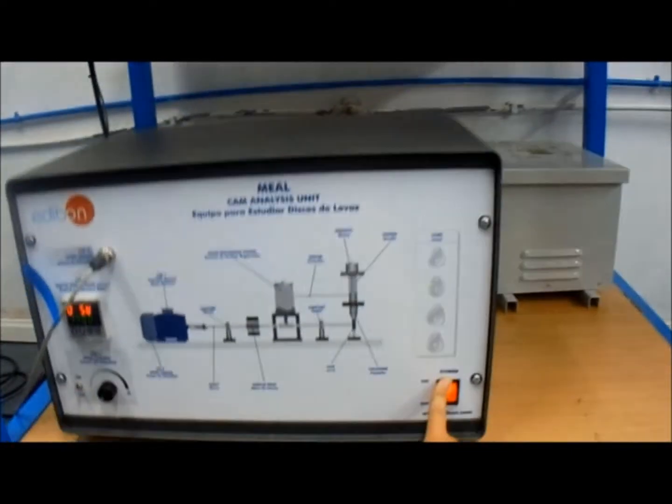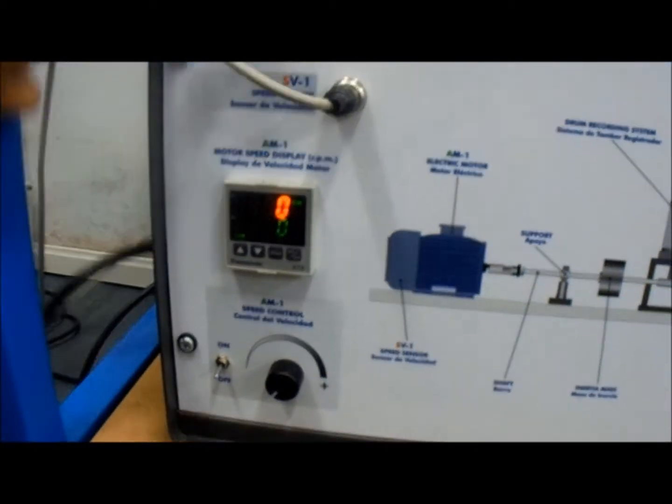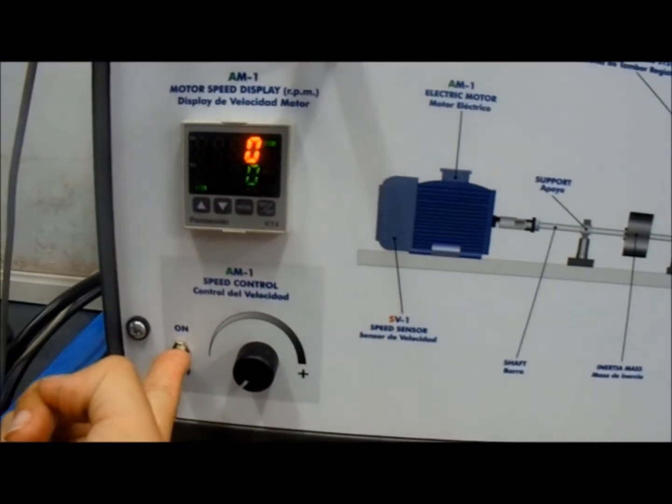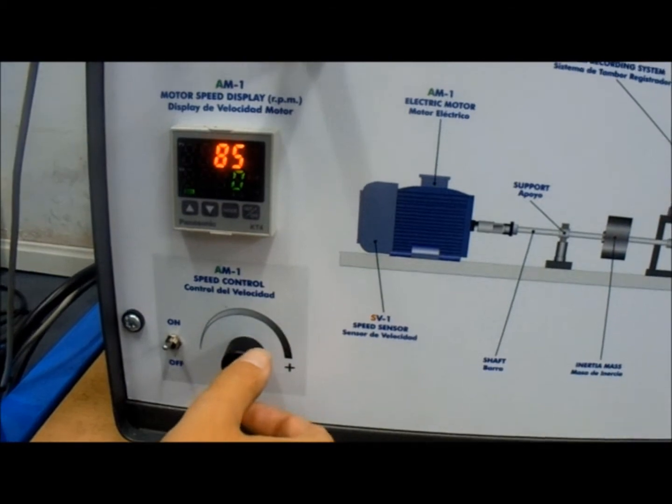In the console, we can find a display for the measurement of the speed of the motor and the control of the motor using a potentiometer.